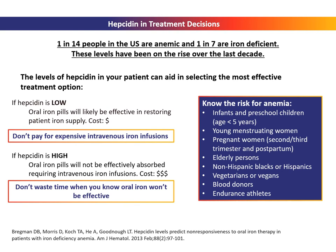Hepcidin levels can predict the effectiveness of oral iron pills due to its role in controlling iron absorption from the gut. If hepcidin is low, oral iron pills will be sufficiently absorbed to correct the deficiency. However, if levels are elevated, oral iron will not be effective, requiring IV iron treatment. In this way, hepcidin can save patients money if responsive to oral iron, or save time by directing treatment to IV iron.